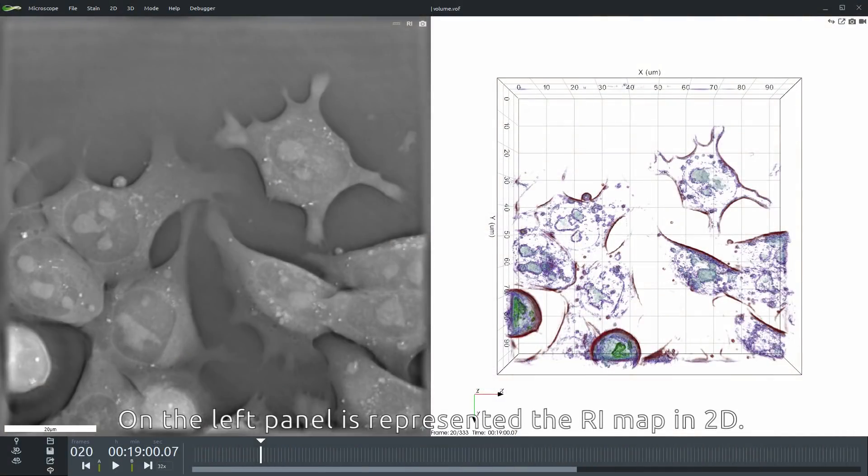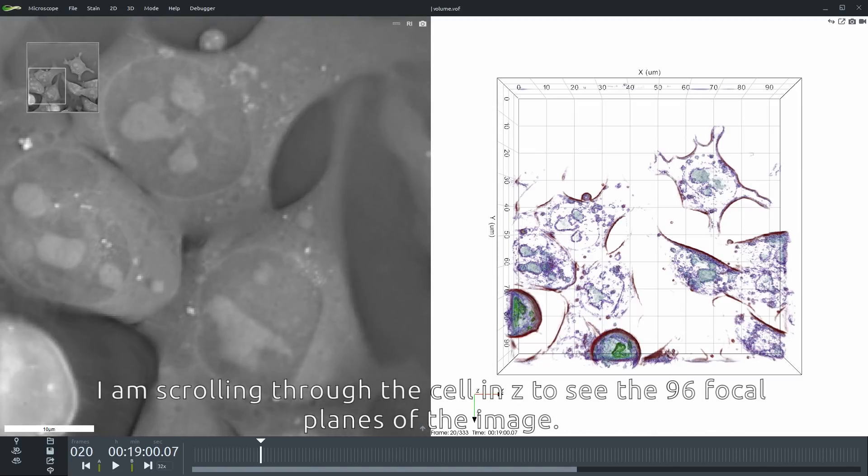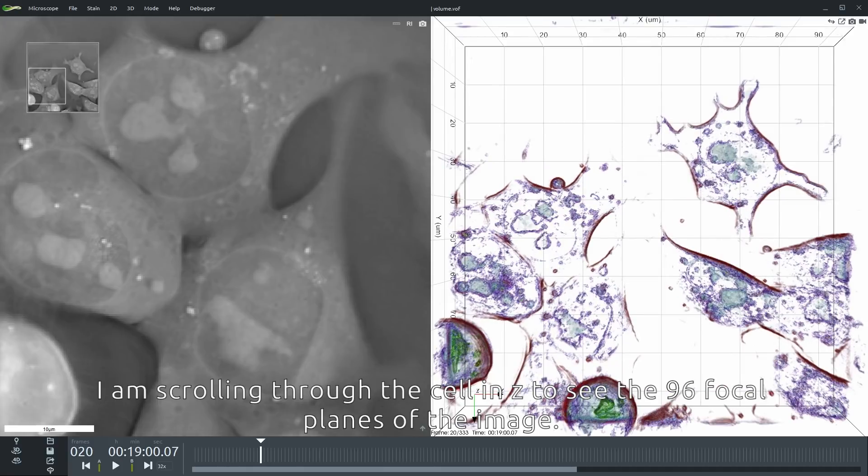On the left panel is represented the refractive index map in 2D. I am now scrolling down through the cell in Z to see the 96 focal planes that compose the image.